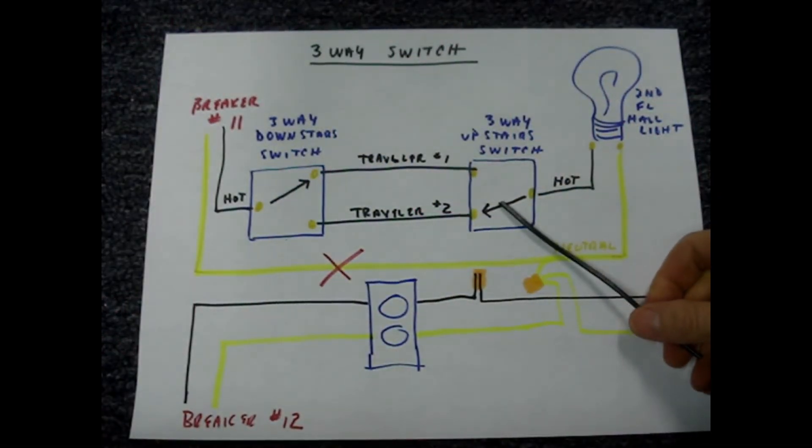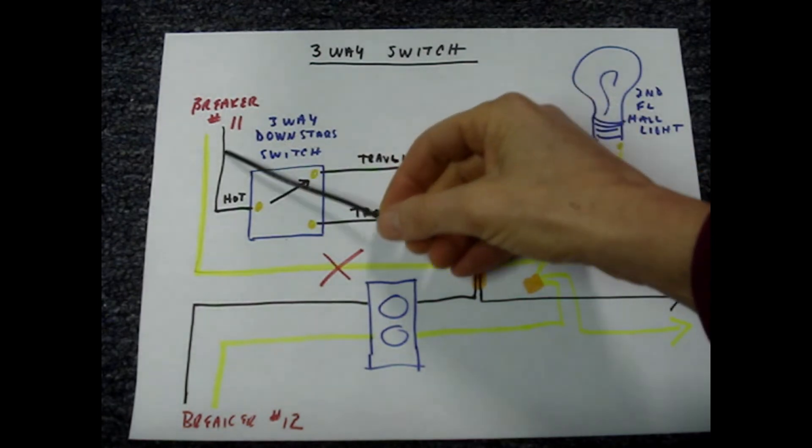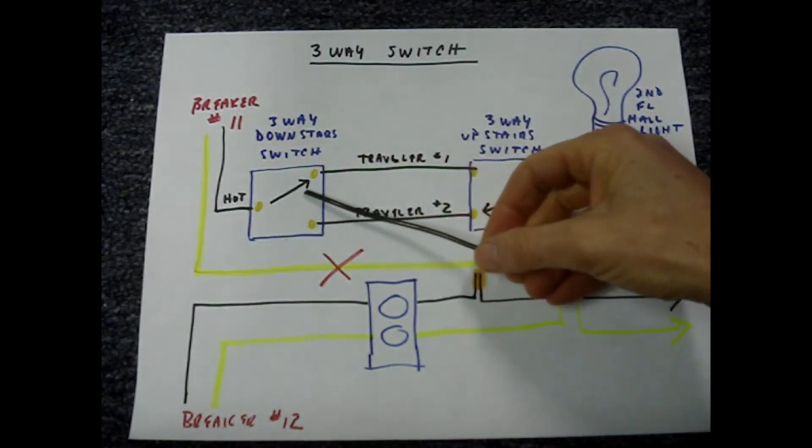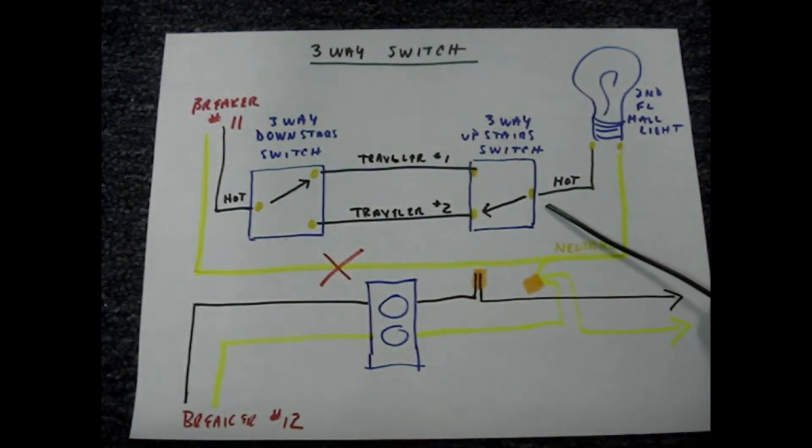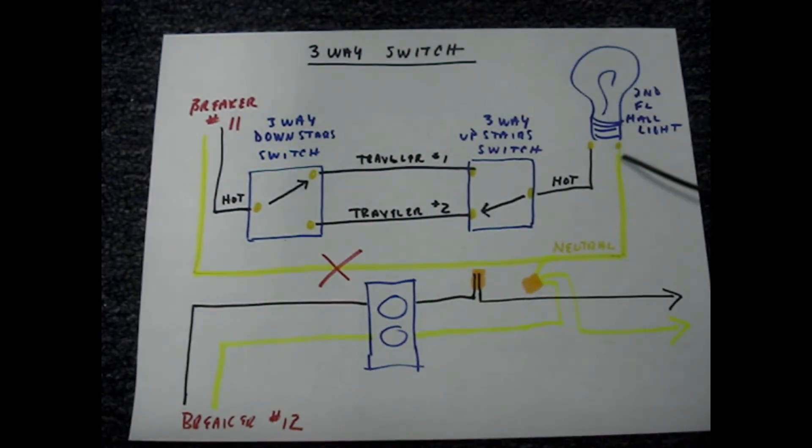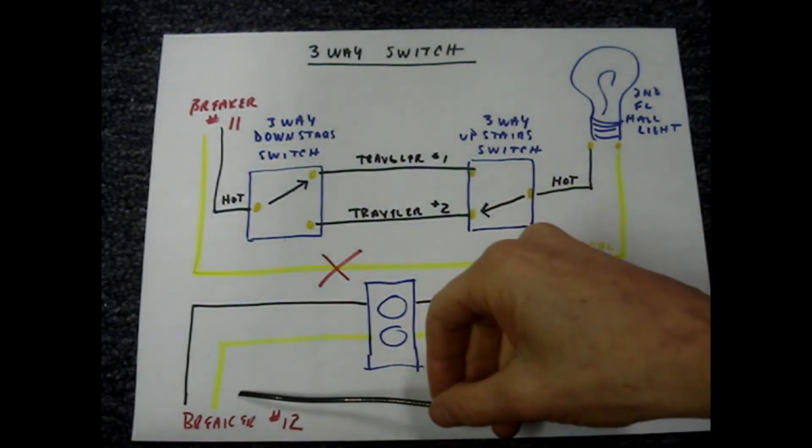If one of these three-way switches were positioned in the on position the hot would come from breaker 11 through the switches, illuminate the second floor hallway light, and then return to the power source through the neutral connected to breaker number 12.